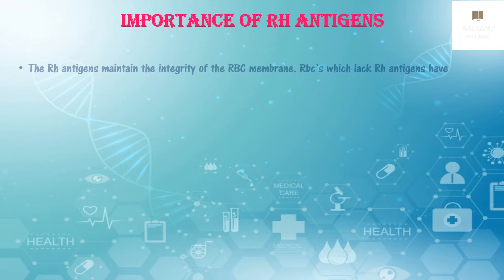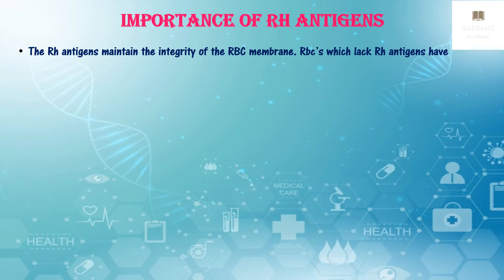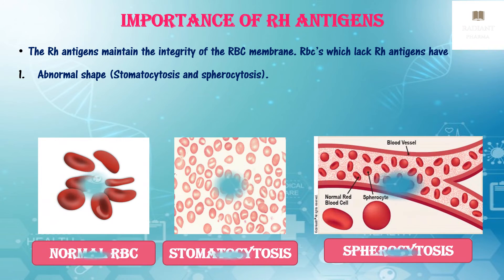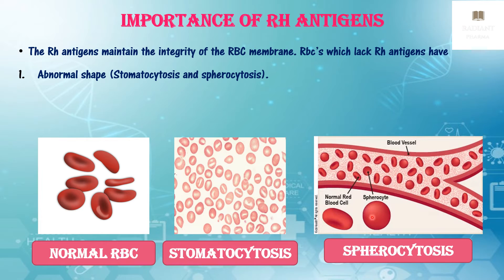Now let us see the importance of RH antigens. RH antigens maintain the integrity of the RBC membrane. Red blood cells which lack RH antigens have an abnormal shape — stomatocytosis and spherocytosis. By looking at the picture, you can see the difference between normal RBCs and RBCs with abnormal shape. Stomatocytosis is a rare condition of RBCs in which a mouth-like or slit-like pattern replaces the normal central zone.